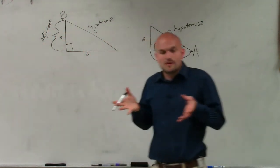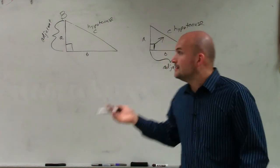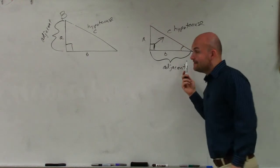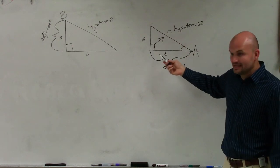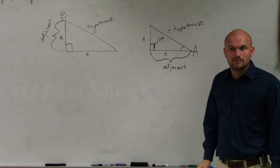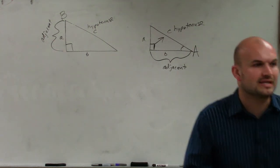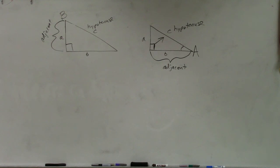So if I'm referring to angle B, now side A is the adjacent leg. If I'm referring to angle A, side B is the adjacent leg. We'll get a little bit more into this, but I just want to make sure you guys understand how to determine the adjacent legs or adjacent side.